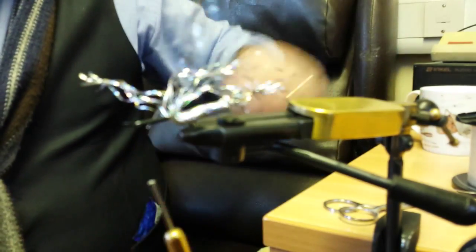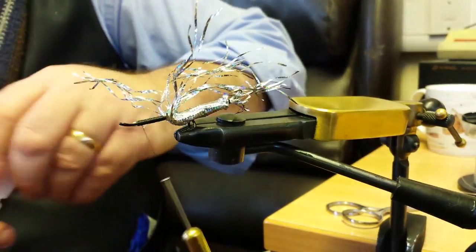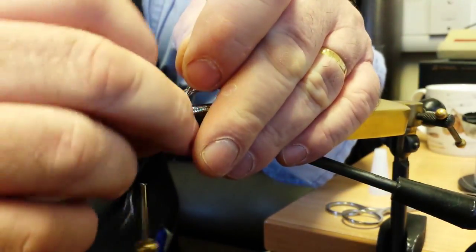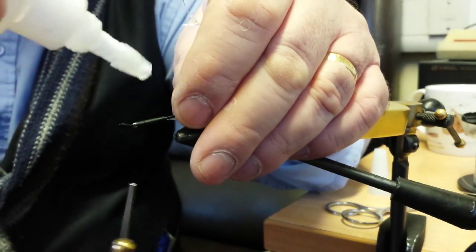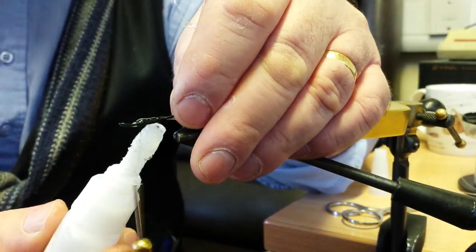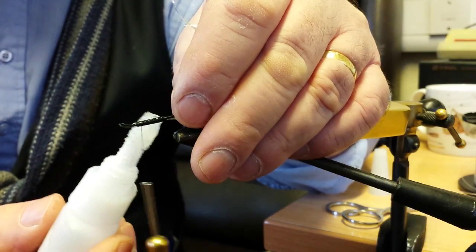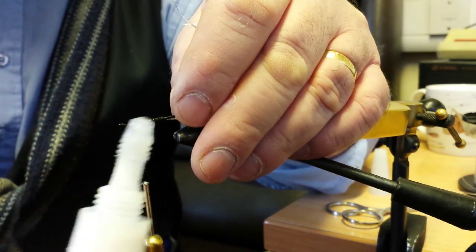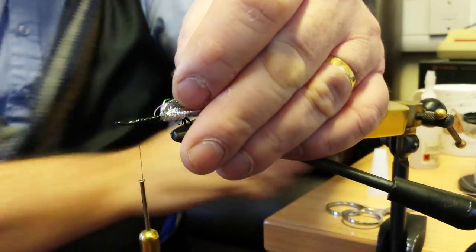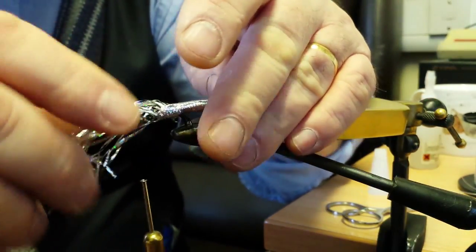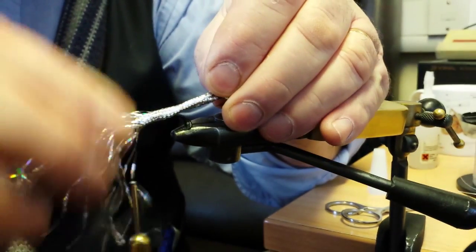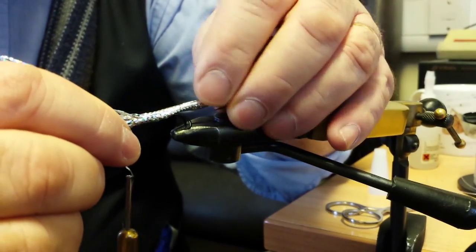That will do the trick. And now the super bond glue. Now we put our Maillard tubing back up over the shank.